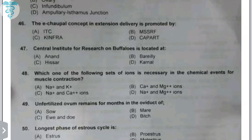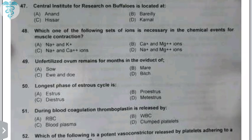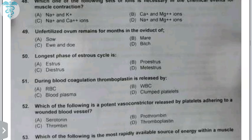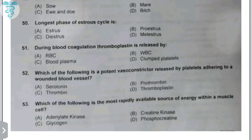The ions necessary for muscle contraction are calcium and magnesium. In equine species, the unfertilized ovum remains for months in the oviduct. The longest estrus cycle is diestrus. During blood coagulation, thromboplastin is released from platelets when they are clumped.